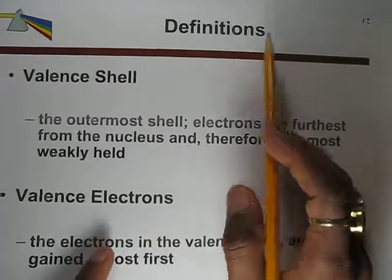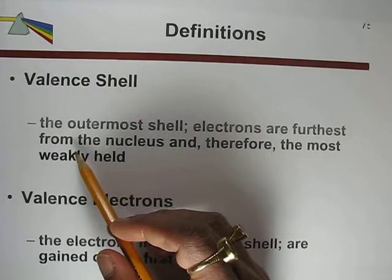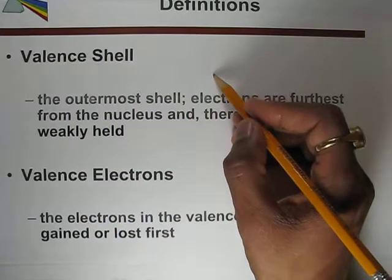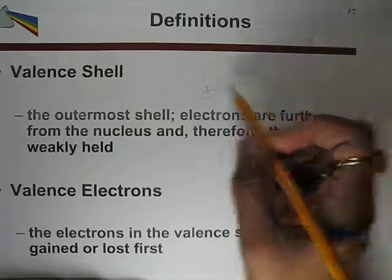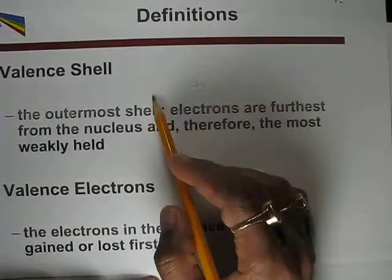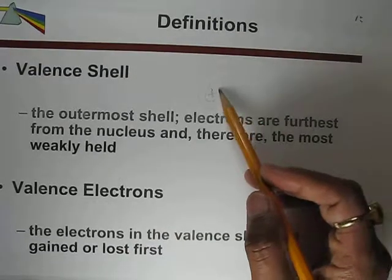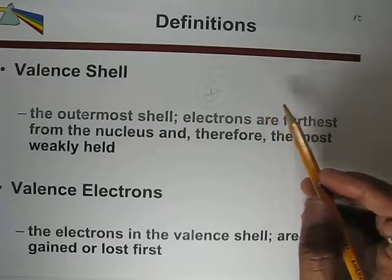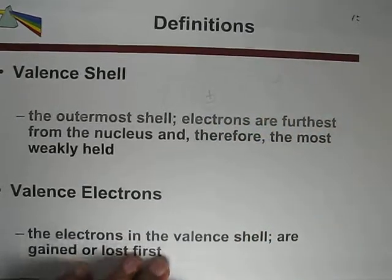Two important terms are valence shell and valence electron. The valence shell is the outermost shell of an atom — it is furthest from the nucleus and therefore its electrons are most weakly held. The electrons in the valence shell are called valence electrons. These are the electrons most easily gained or lost during chemical reactions, because the nucleus exerts the least attraction on them.